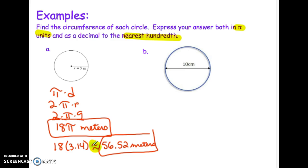Let's try the second one. It's going to be very similar. Again, our formula is π times diameter, or π times 2 times radius. This time it's going to be easiest to just use the diameter; it's given to us here. So we'll do π times 10. Wonderful! In π units, it's already done. This is 10π centimeters.